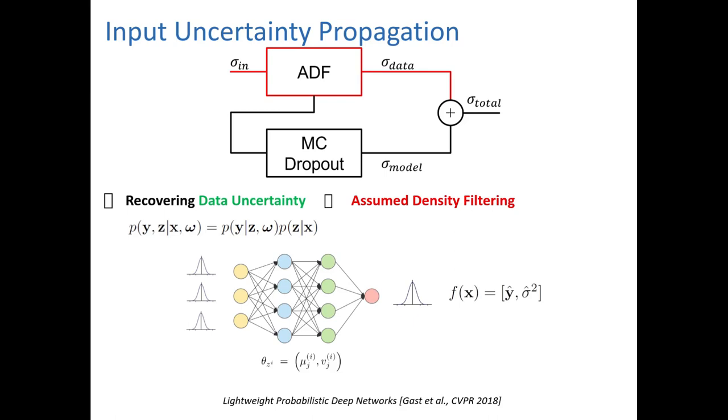To model the data uncertainty, we use assumed density filtering. Specifically, we fit every neural network node with a Gaussian distribution and set the input Gaussian distributions with the noise coming from the sensor characteristics.